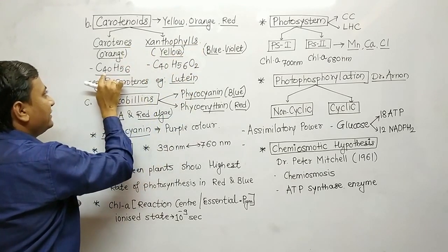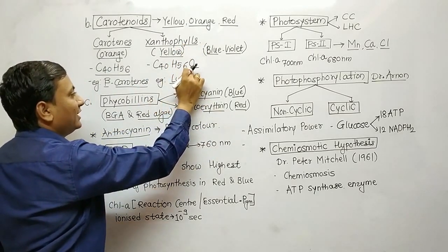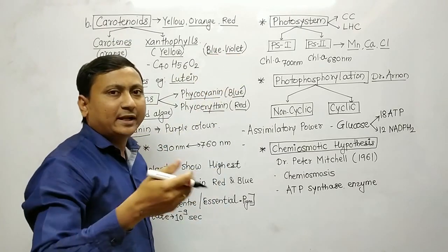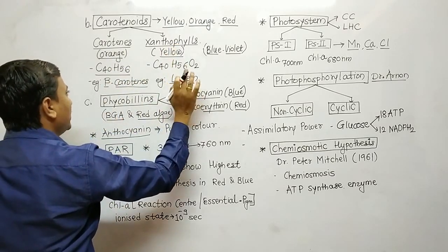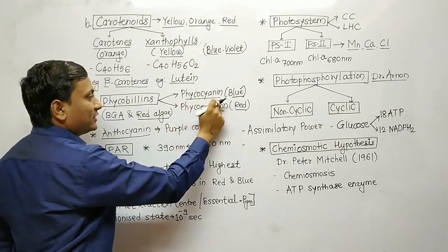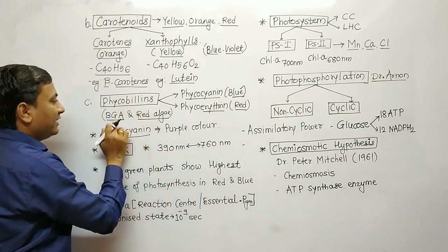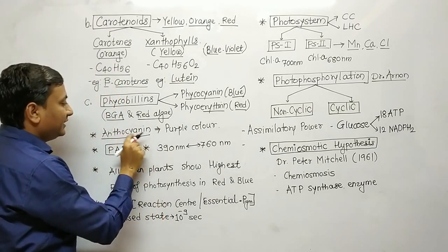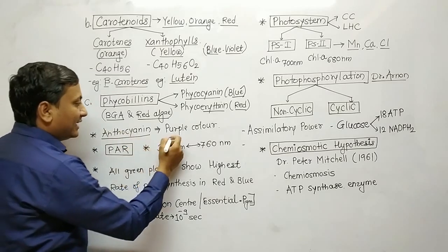Carotenoids are another group of pigments. Phyc pigments are also present. Anthocyanin is a pigment present in the colored parts of fruits and flowers, but it is not photosynthetic; it is purple in color.